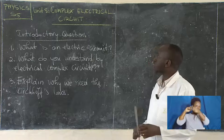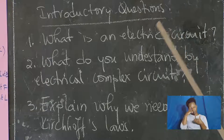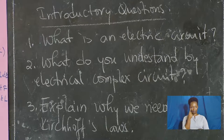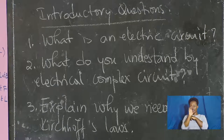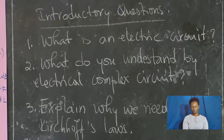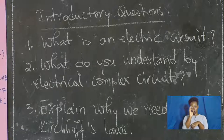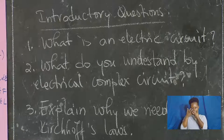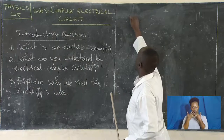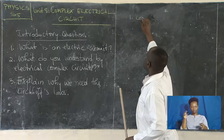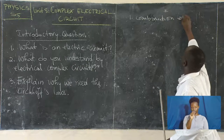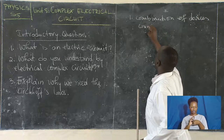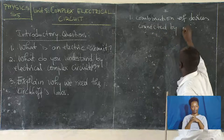These are the introductory questions that you are going to see now introducing our unit. Question number one: what is an electric circuit? An electrical circuit is a combination of electric devices — it is a configuration, a diagram, into which you have a combination of electric devices connected by conducting wires. That is: a combination of devices connected by conductors.